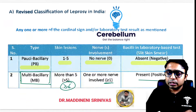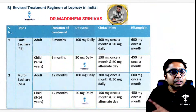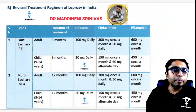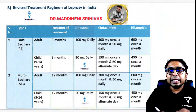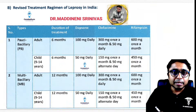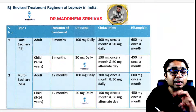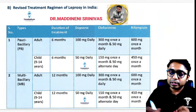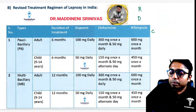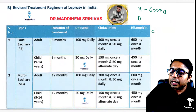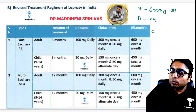This is the small change in the classification of PB and MB. In the treatment, the only change is that paucibacillary patients are now also going to get three drugs. Those three drugs are Rifampicin, Dapsone, and Clofazamine. Rifampicin dose is 600 mg once a month, and Dapsone is 100 mg daily.